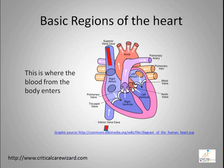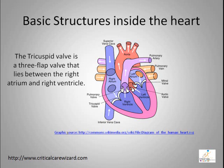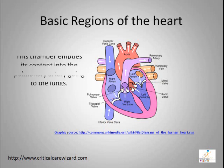From the superior and inferior vena cava, the blood enters the right atrium. From the right atrium, the blood then passes through a three-flap valve called the tricuspid valve, going to the lower right portion of the heart referred to as the right ventricle.